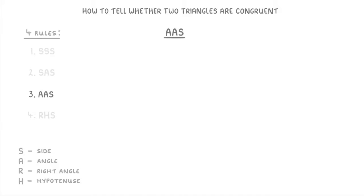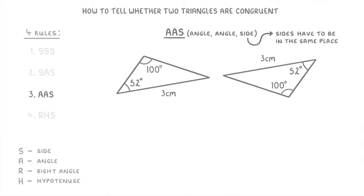Next up, we have the AAS rule, which stands for angle, angle, side. So for this rule, you need two of the angles and one of the sides to be the same. The important bit, though, is that for the two triangles to be congruent, the sides have to be in the same place relative to the angles. Have a look at these two triangles here — in both cases, the triangles have two angles that are the same size, and a side that's the same length. The important bit is that the 3cm sides are both opposite the 100-degree angle, so the side that's the same length for both triangles is in the same place relative to the angles. This means that they fulfill the AAS rule and count as congruent.